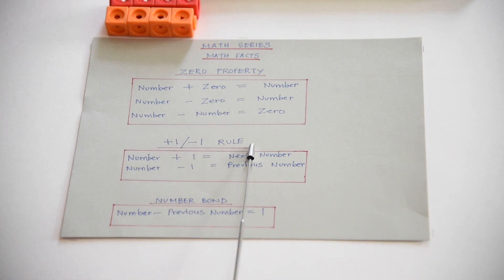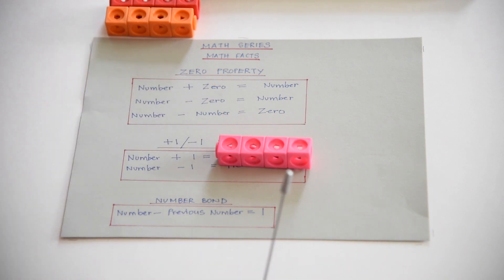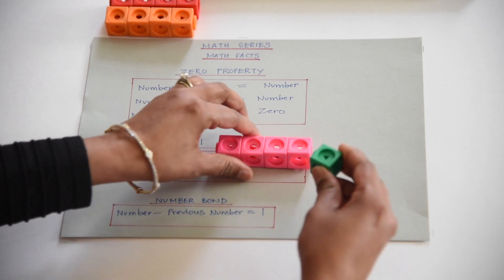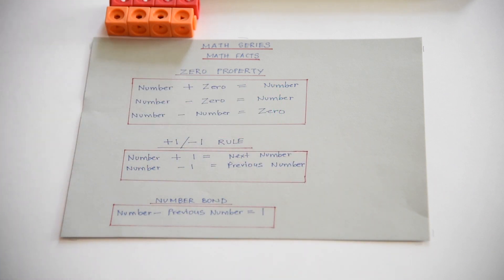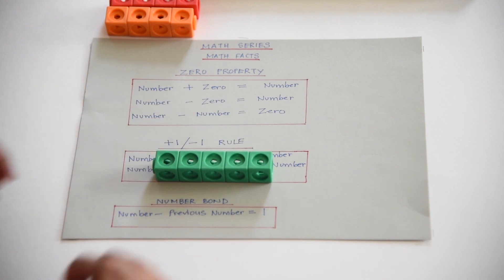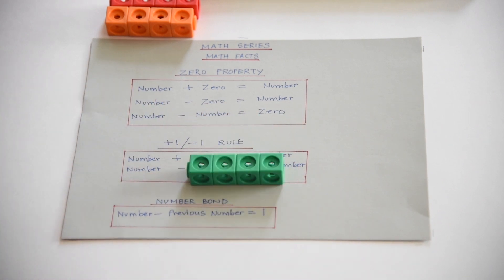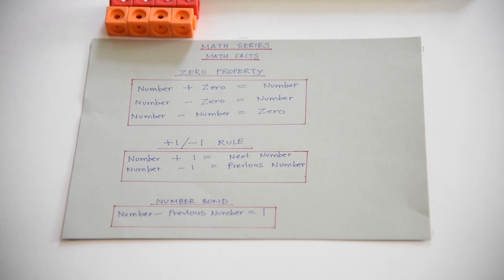Now let's do the plus one and minus one rule. Ishaan, you have four multilink cubes. I give you one more. How many do you have? Five. That's the next number, right? There's four plus one equals five. So number plus one always gives you the next number. Now let's do number minus one. You have five multilink cubes. I take away one. How much do you have? Four — that's the previous number. So if you take away one you get the previous number. And that's five minus one equals four.